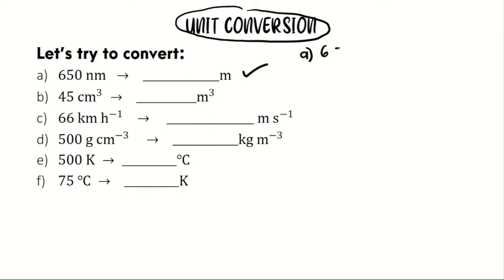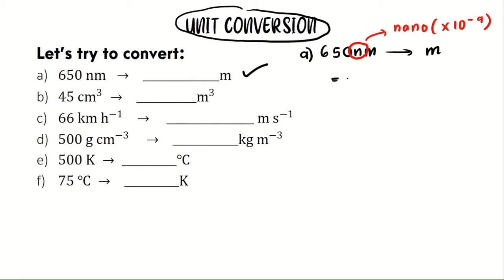We want to convert 600 nanometers to meters. First, identify the prefix involved — here it's nano, which equals 10 to the power of negative 9. Substitute 10⁻⁹ in place of the prefix nano, giving us 650 × 10⁻⁹ meters.